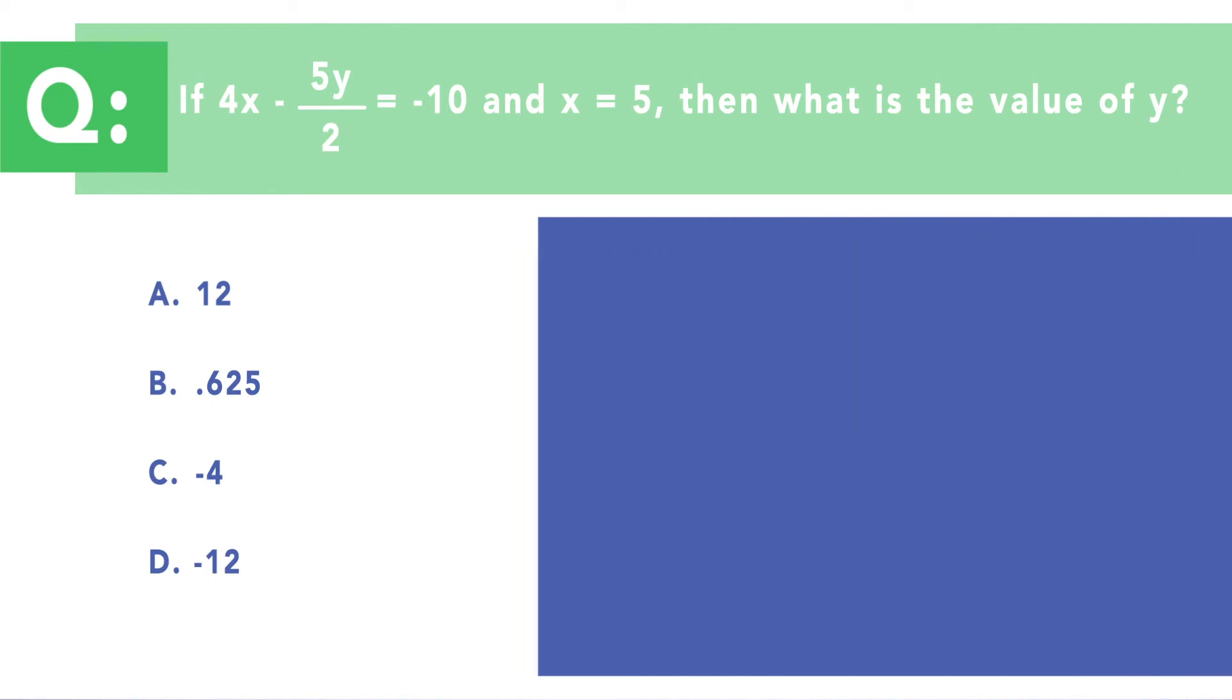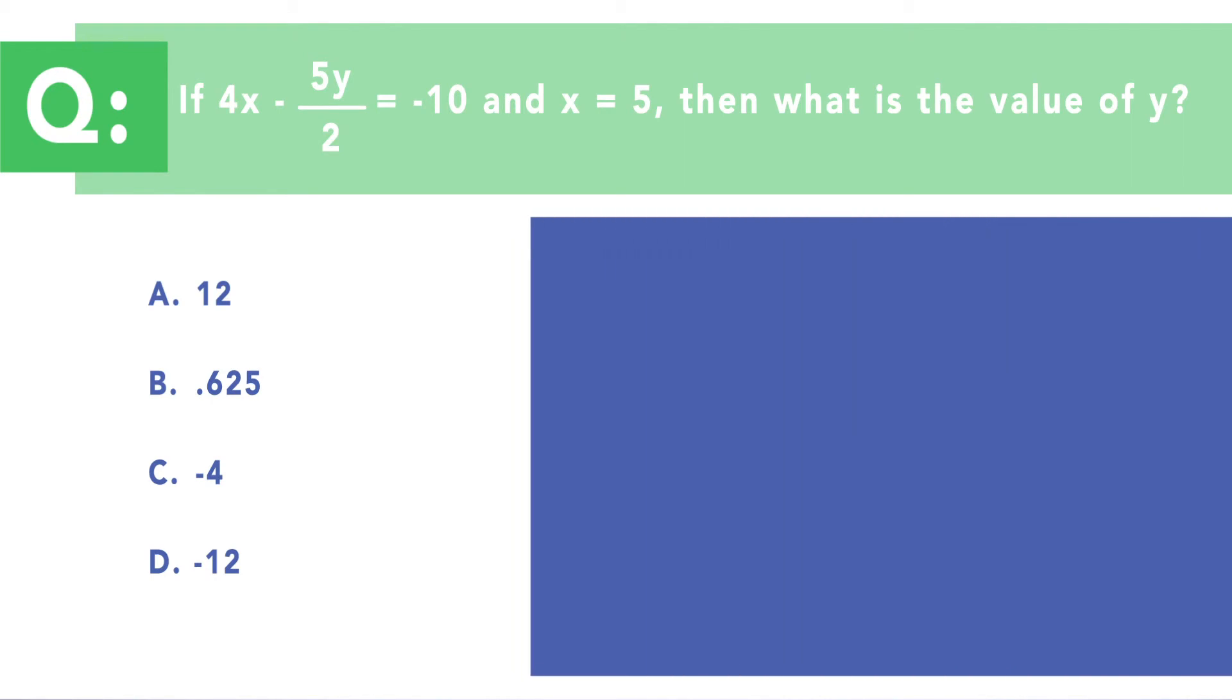Now to answer this question, we begin by substituting in the value of 5 for the variable x in the original equation. So this is going to give us 4 times 5 minus 5y over 2 equals negative 10. So simplification of 4 times 5 can be performed so that the equation simply becomes 20 minus 5y over 2 equals negative 10.